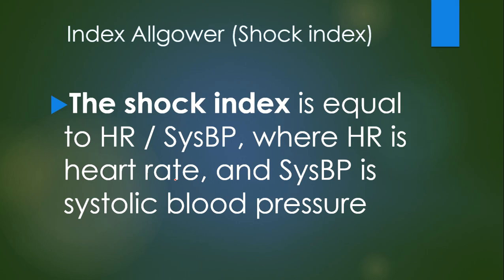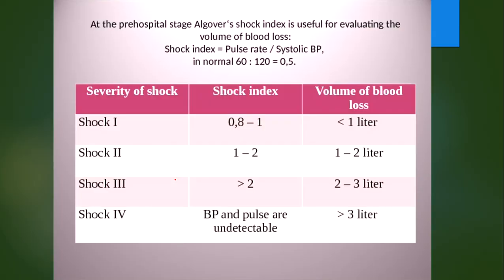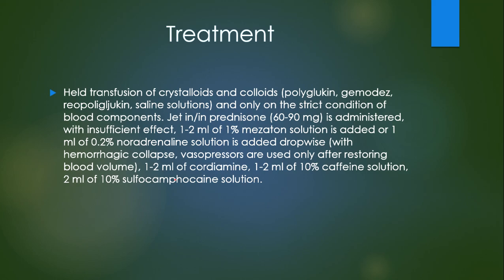At the pre-hospital stage, the shock index is useful for evaluating the volume of blood loss. Normal shock index is approximately 0.5. Blood loss less than one liter gives an index of 0.8 to 1.0. Shock of the second degree: index 1 to 2. Shock of the third degree: index greater than 2.